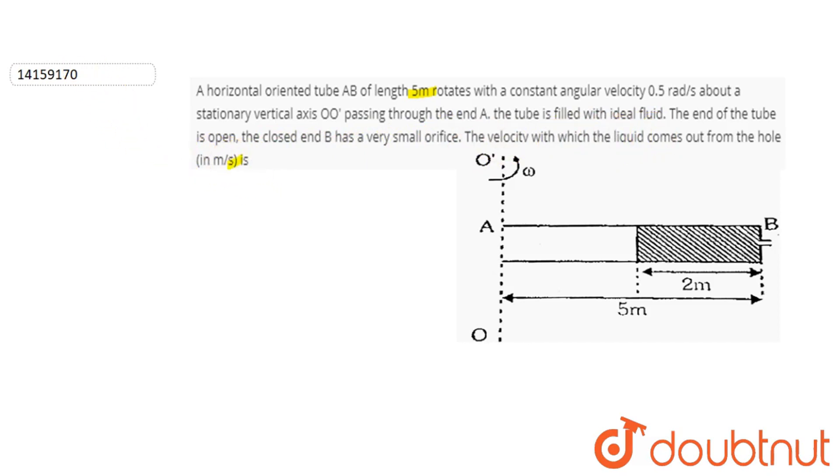Okay, we know that if the system is rotating, then what is the radial acceleration? If there is a circular motion, then V square by R. Okay, so omega square R is what? Omega square R.